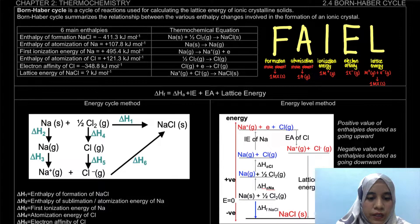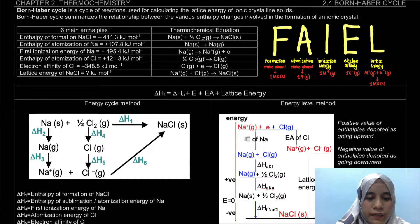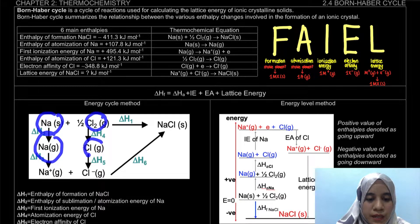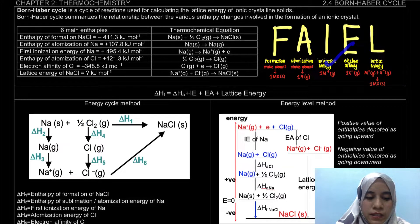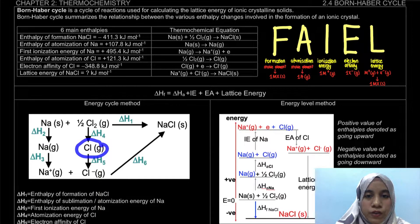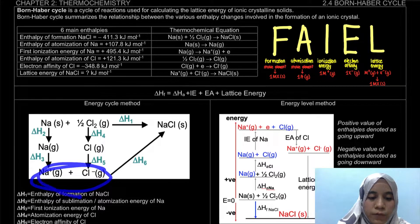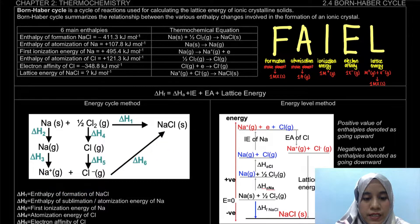For the energy cycle method, we start with our formation — that is the first enthalpy. Next is atomization: from Na solid it becomes Na gas, and from half Cl₂ it becomes Cl gas — one mole of atom. Then ionization energy: from Na gas it becomes Na⁺. We don't need to write down the electron. For chlorine, electron affinity: Cl gas becomes Cl⁻. And last but not least, when these two gaseous ions combine, it forms our lattice energy. That gives us the complete energy cycle.